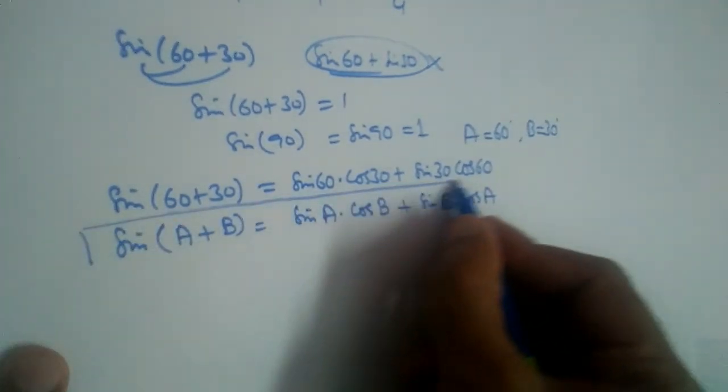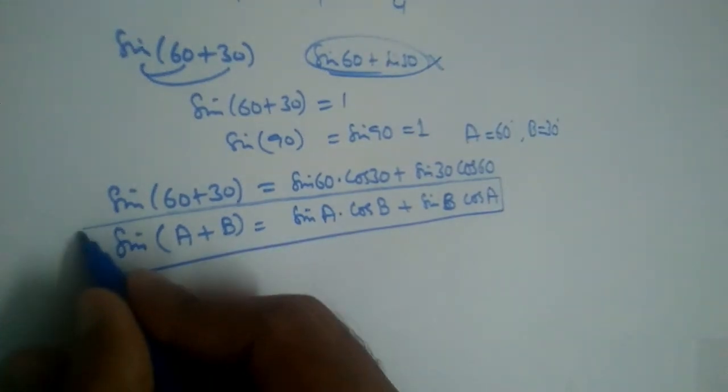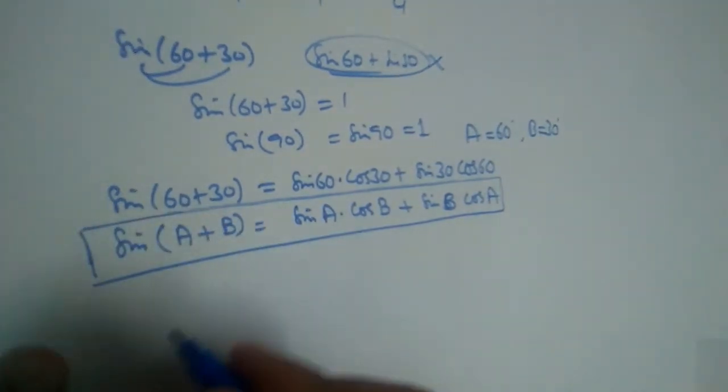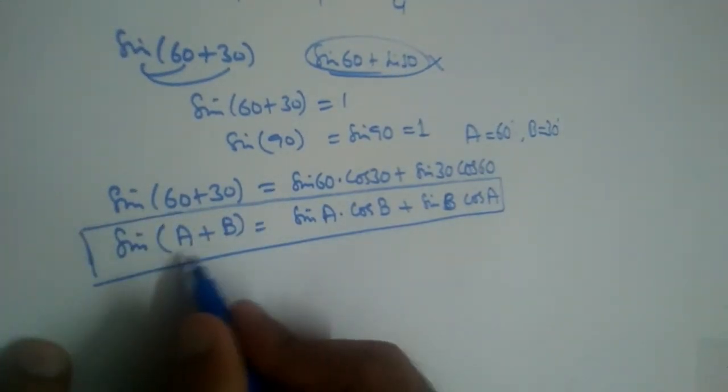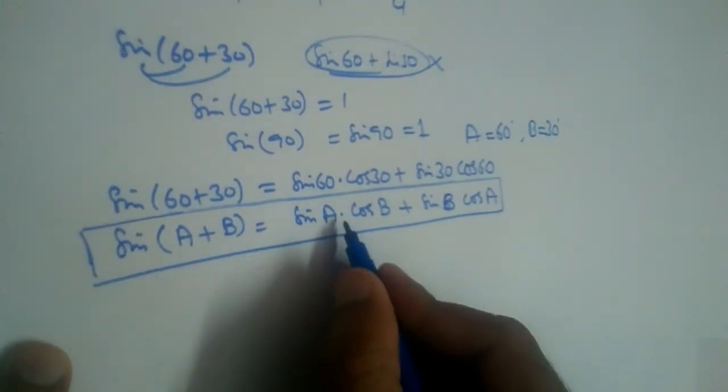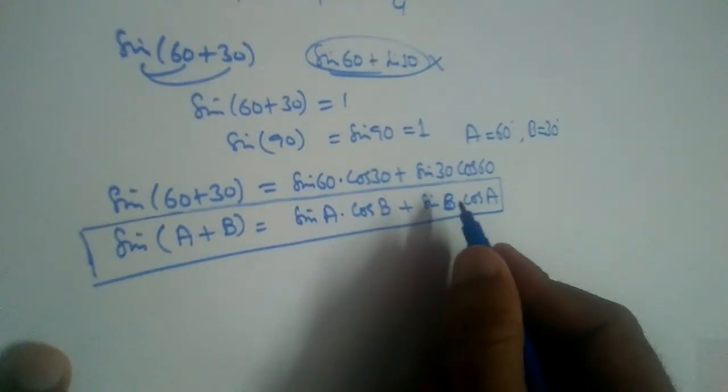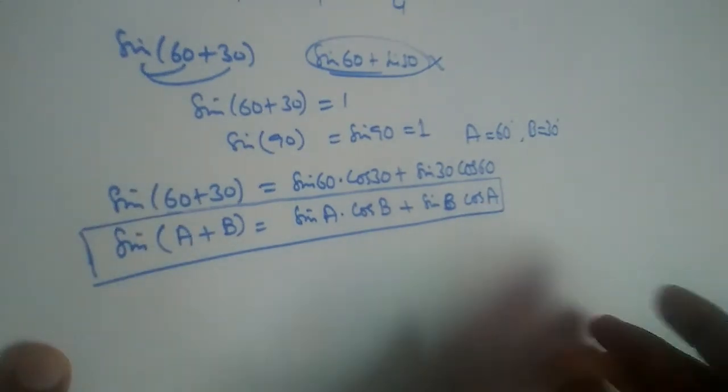This is a formula which you will learn in 11th class. What is it? Sin(A + B) is equal to sin A cos B plus sin B cos A.